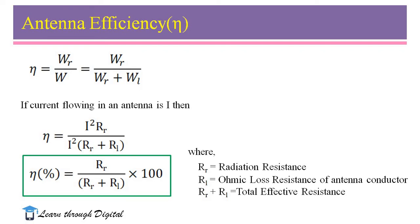Therefore, WR/W, that is equal to WR/(WR + WL). The WR is I²RR. Therefore, η = I²RR/(I²(RR + RL)). This equation is simplified as η = RR/(RR + RL).